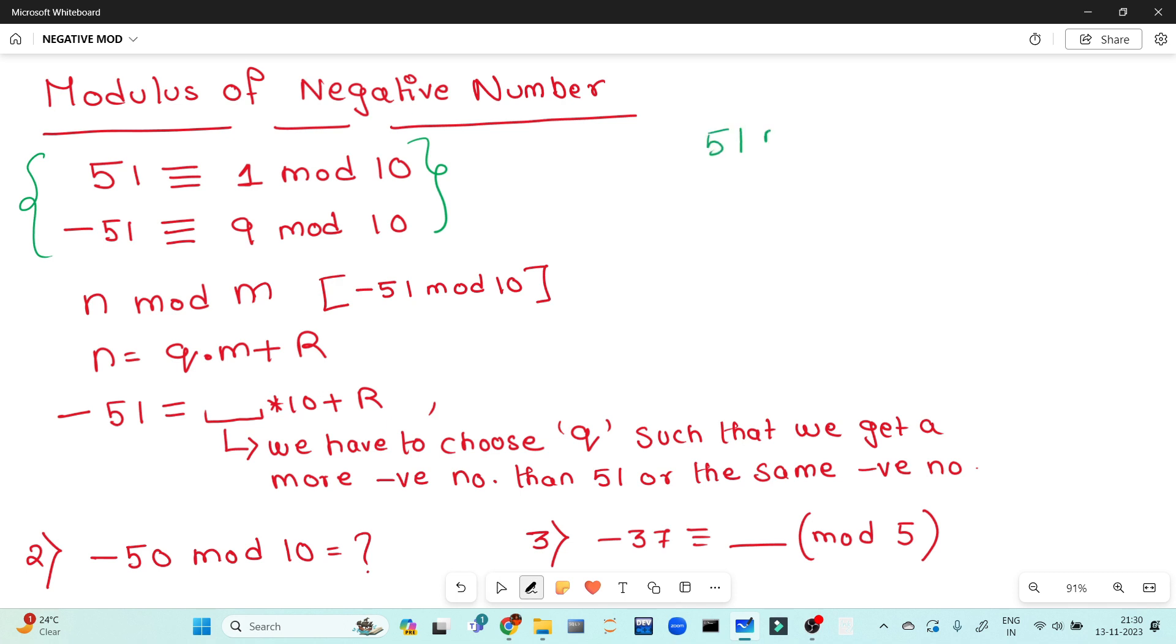Let's consider an example: 51 mod 10. We know 51 mod 10 equals 1 mod 10. Now, what about minus 51 mod 10? We need to determine how to handle negative numbers. I'll discuss the method, following a procedural approach for finding the modulus when dealing with negative numbers like minus 51.